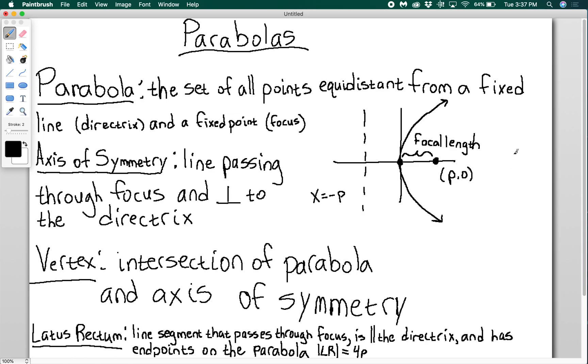And then finally, we have the latus rectum. The latus rectum is a little line segment that passes through the focus, is parallel to the directrix, and has endpoints on the parabola. And the length of the latus rectum is always 4p. So if I drew the latus rectum on this parabola, it would look like this. It has endpoints right here and right here, and this length is always 4p. And we can use the latus rectum to help us get a more accurate drawing of our parabola.